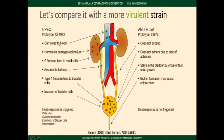Comparing it to typical uropathogenic E. coli: the UPEC organisms can cross into the blood and cause bacteremia, damage epithelium, ascend the ureters to the kidneys, invade bladder cells, and produce a host response that causes symptoms. E. coli 83972 doesn't do any of this — it's lost the ability to ascend the ureters, stays in the bladder, grows fast, forms a biofilm, but doesn't trigger a host response, doesn't cause infection or symptoms, and actually out-competes some bad strains, killing them off.